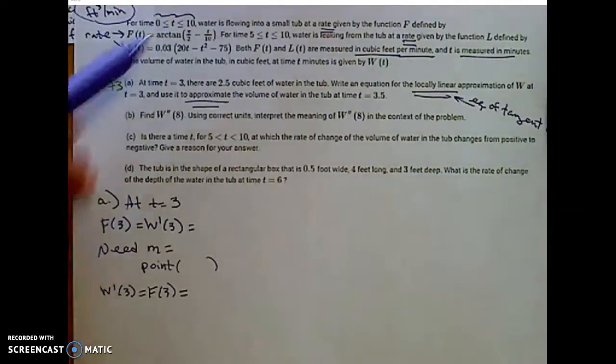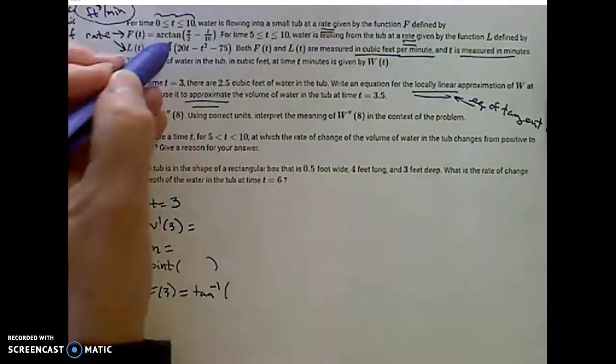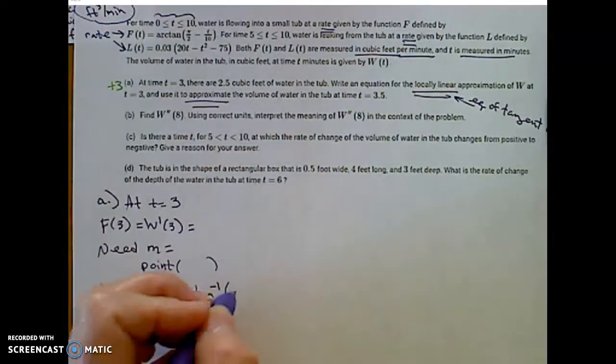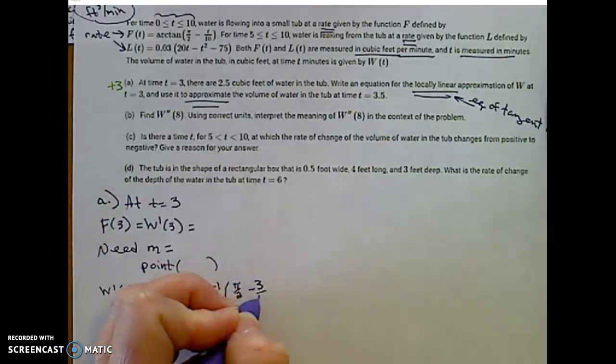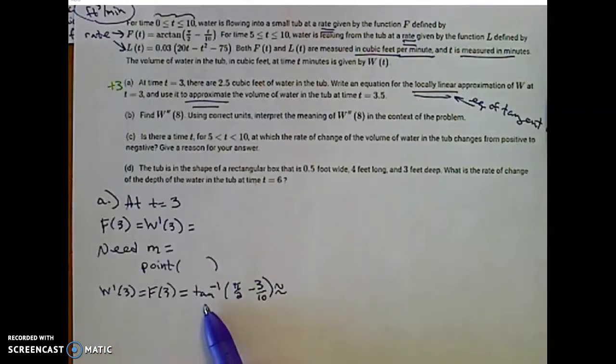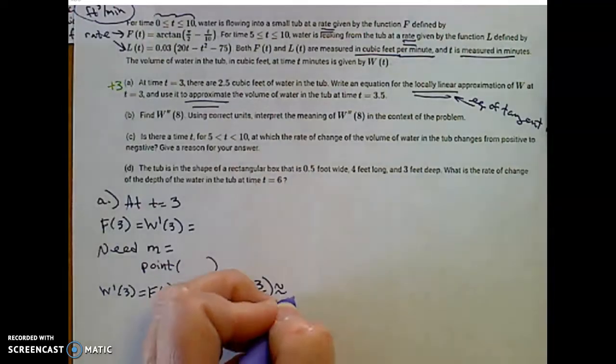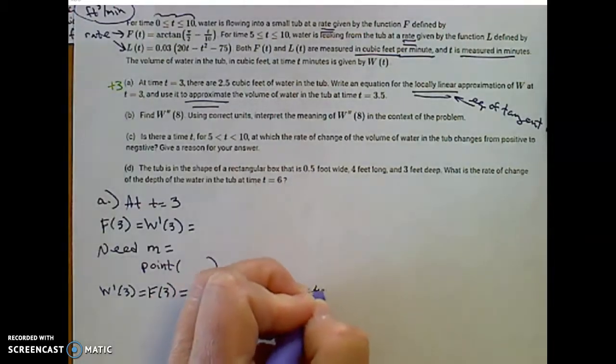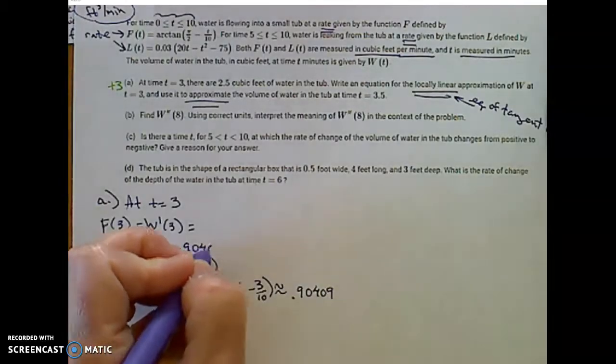Remember, arc tangent is the same as inverse tangent. And I'm going to plug 3 into that inverse tangent function, pi over 2 minus 3 for t over 10. Inverse tangent, pi over 2 minus 3 tenths. And I get 0.90409 for the slope.